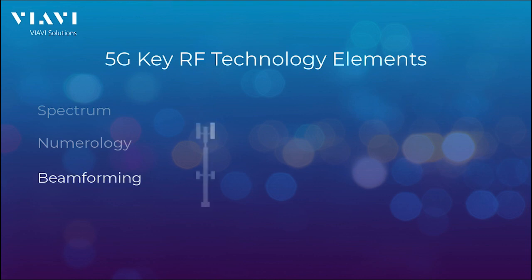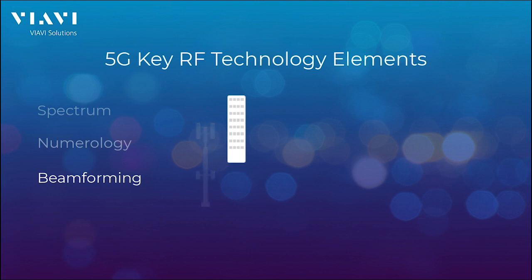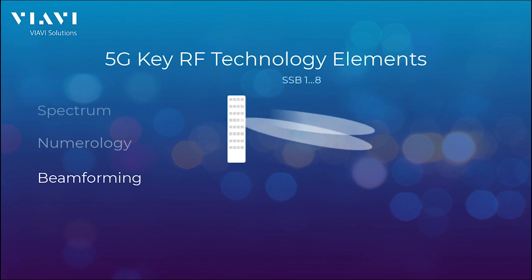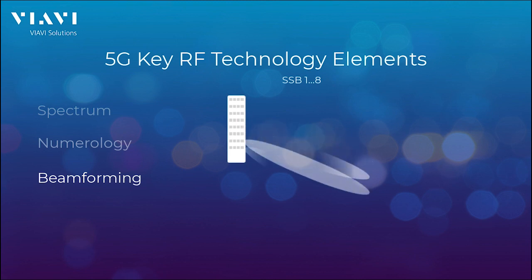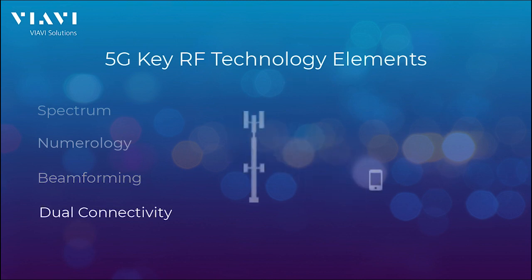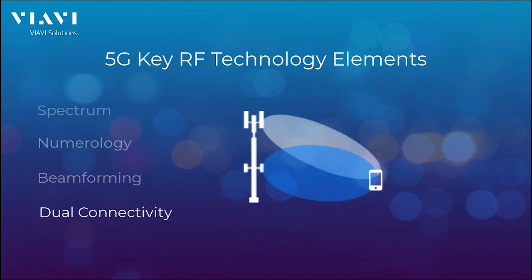The third element is beamforming, where an antenna has a massive number of antenna elements, and each group of antennas can create a beam, or SSB, allowing for independent transmission. And the fourth is dual connectivity, where a mobile phone has dual connection from two different radios, such as non-standalone for control and data.